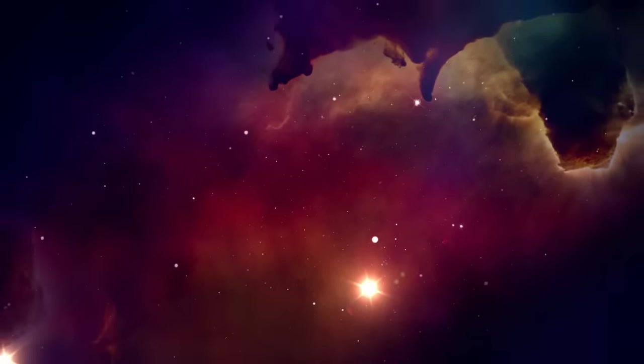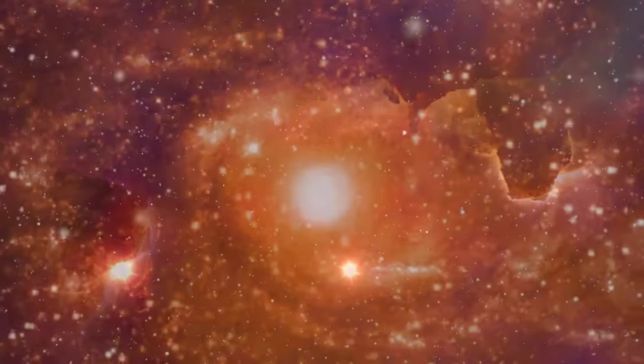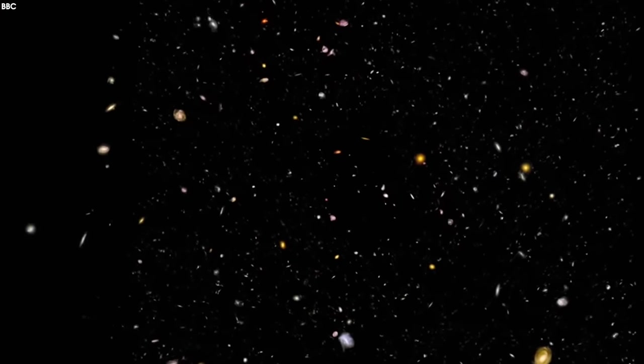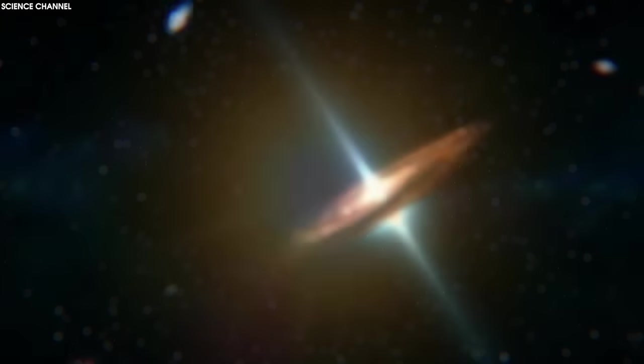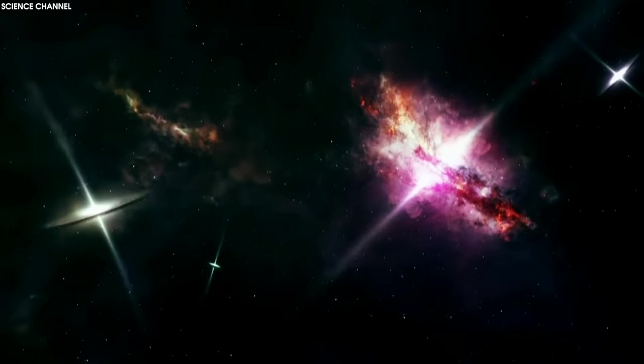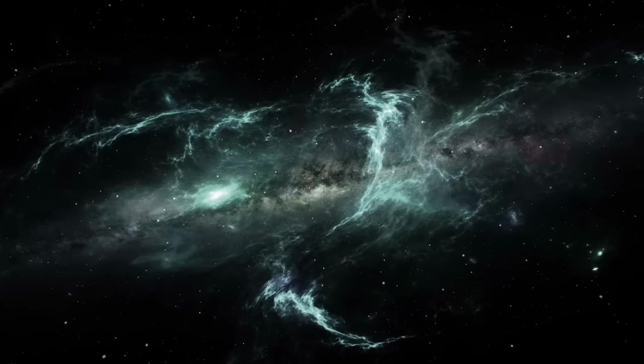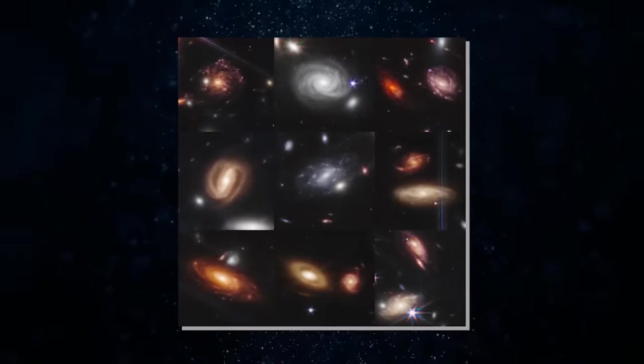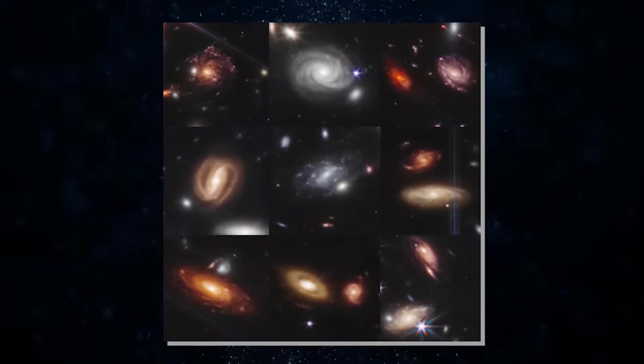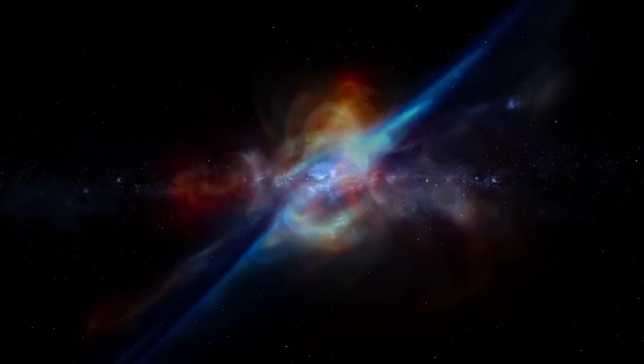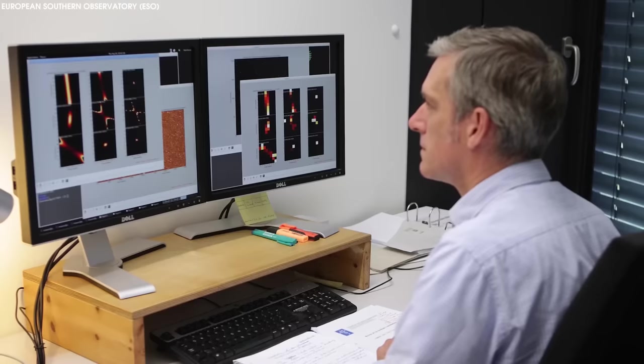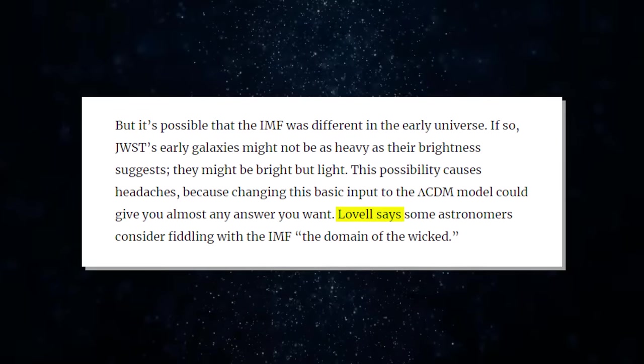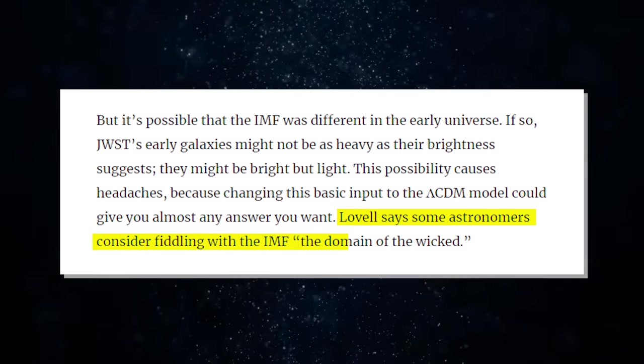One key assumption is that stars always form within a certain statistical range of masses called the Initial Mass Function or IMF. This IMF parameter is crucial for gleaning a galaxy's mass from measurements of its brightness because hot blue heavy stars produce more light, while the majority of a galaxy's mass is typically locked up in cool red small stars. But it's possible that the IMF was different in the early universe. If so, JWST's early galaxies might not be as heavy as their brightness suggests. They might be bright, but light. This possibility causes headaches, because changing this basic input to the ΛCDM model could give you almost any answer you want. Lovell says some astronomers consider fiddling with the IMF, the domain of the wicked.